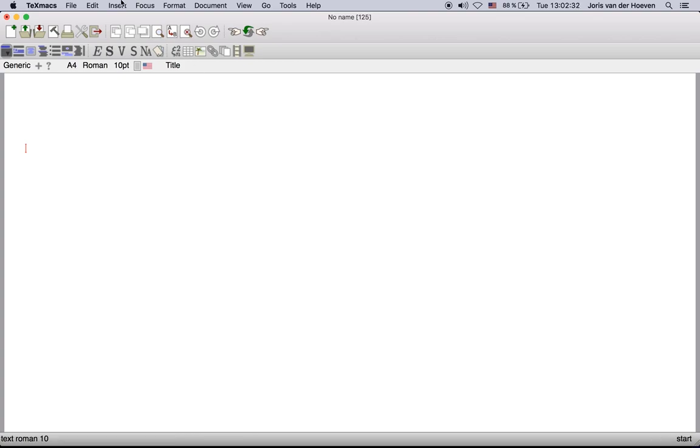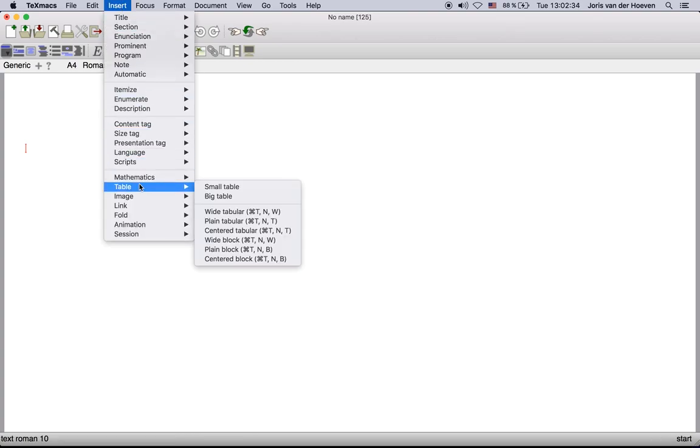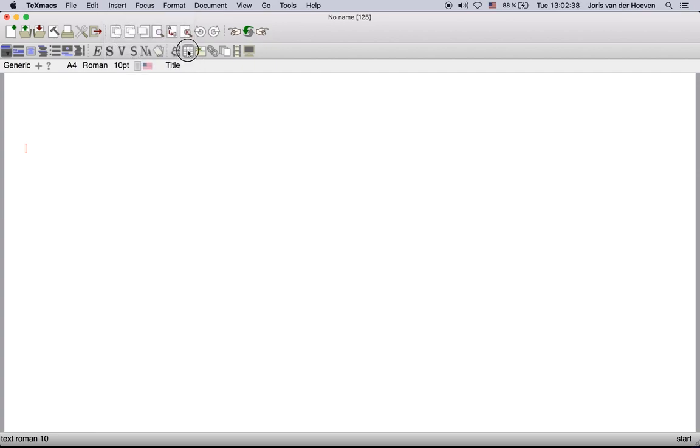You may insert a new table using the insert table menu. Alternatively you may use the following icon menu. There are various types of tables that I will discuss later. For now let us insert a small left-aligned table with borders around the cells.